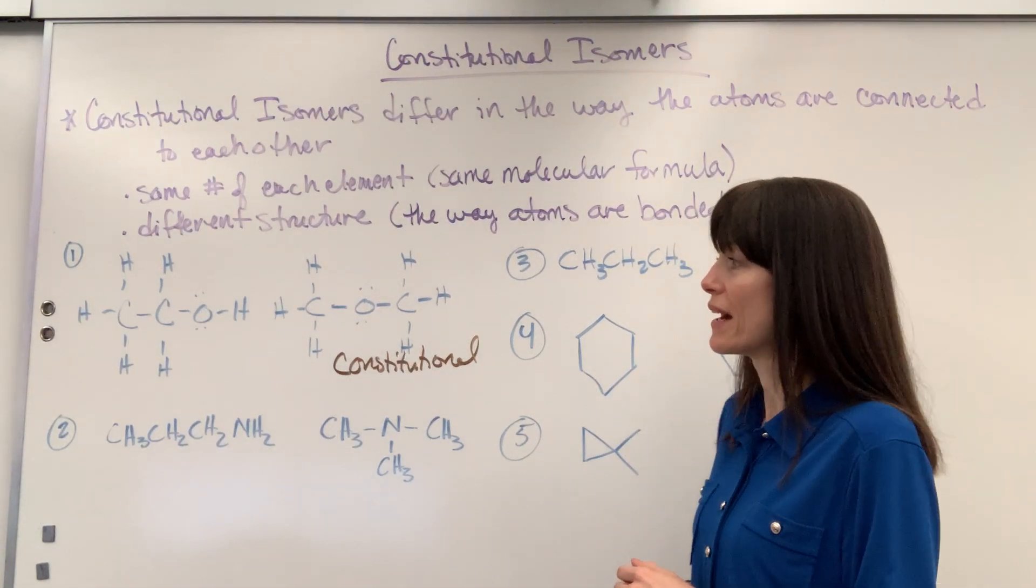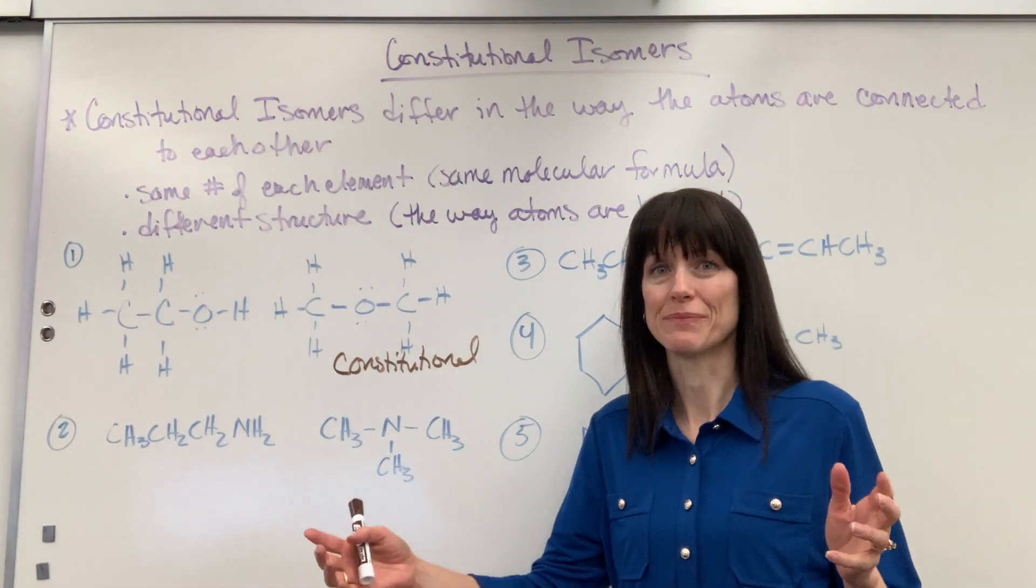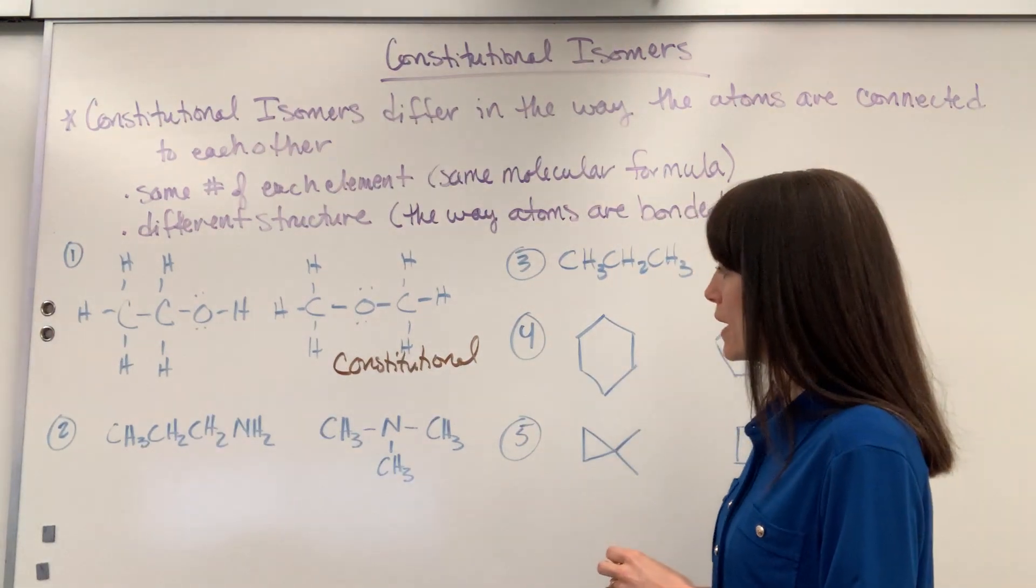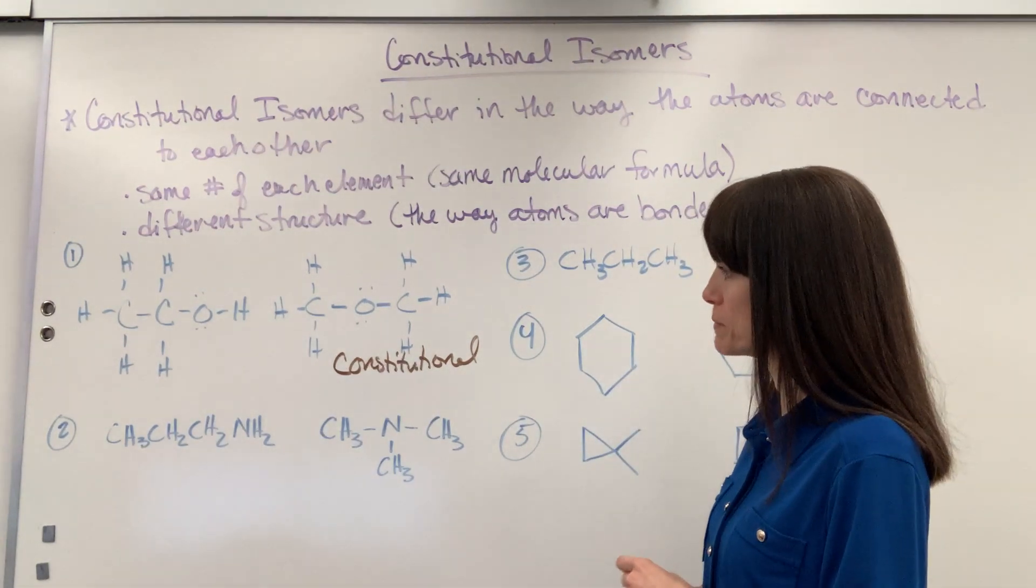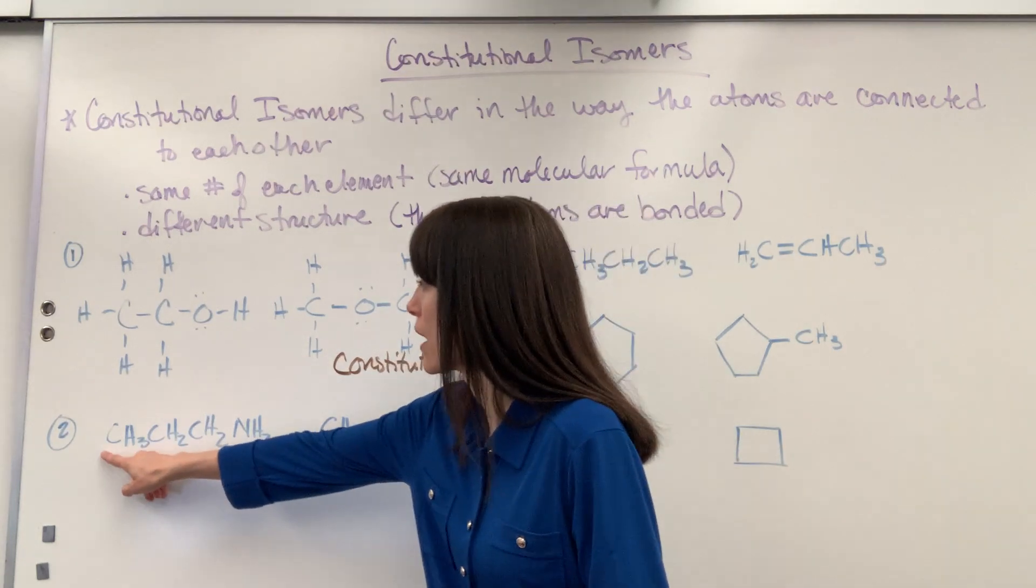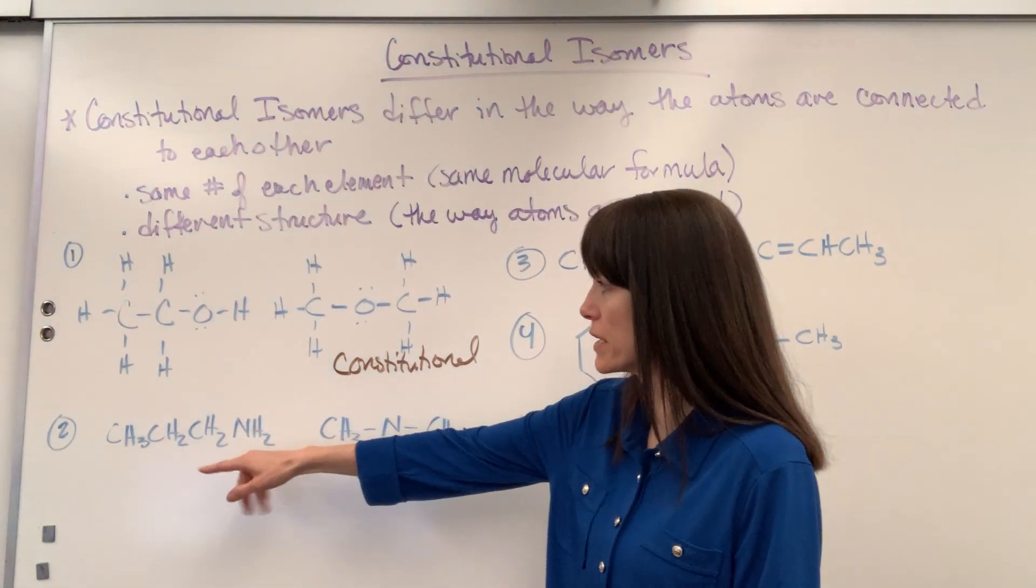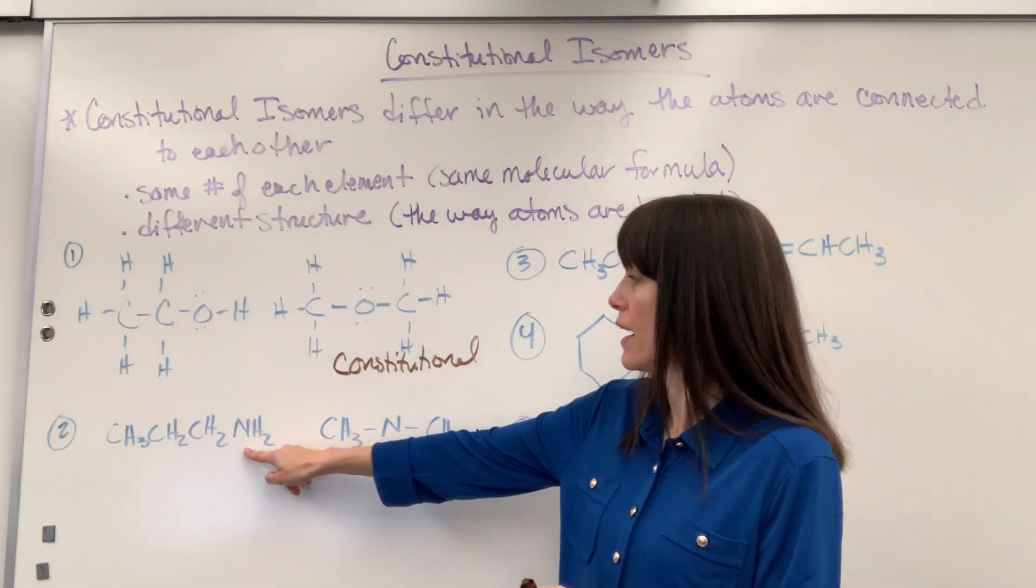We're just looking at the overall bonding. Bonding of the elements. Different bonding. That's a constitutional isomer. Let's look at this one. I've got my 3 carbons attached to hydrogens with a nitrogen at the end.